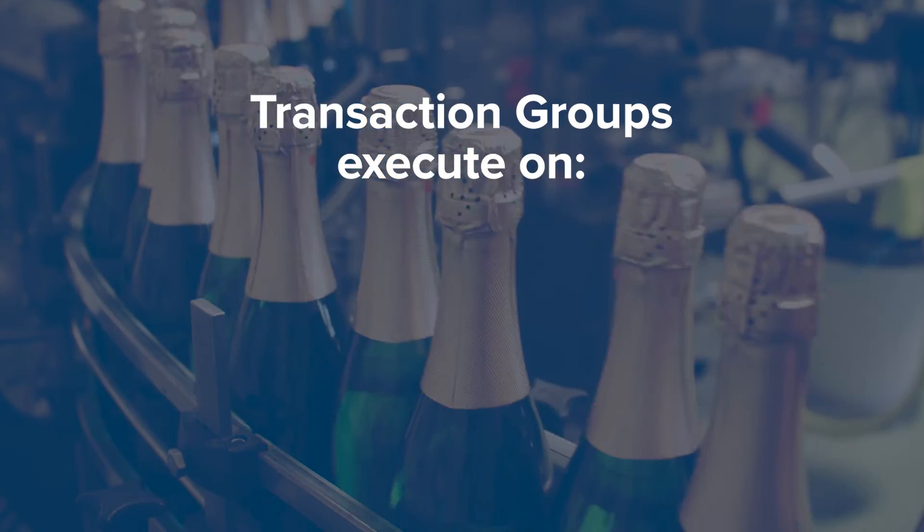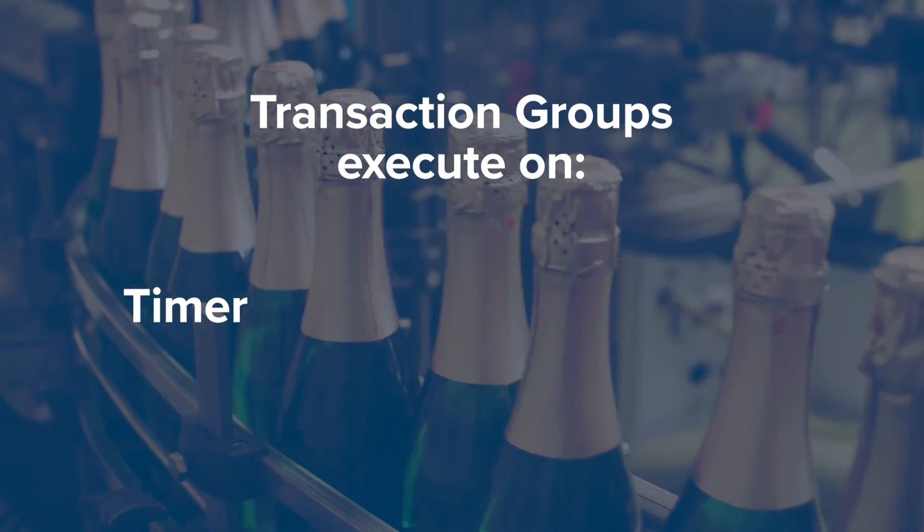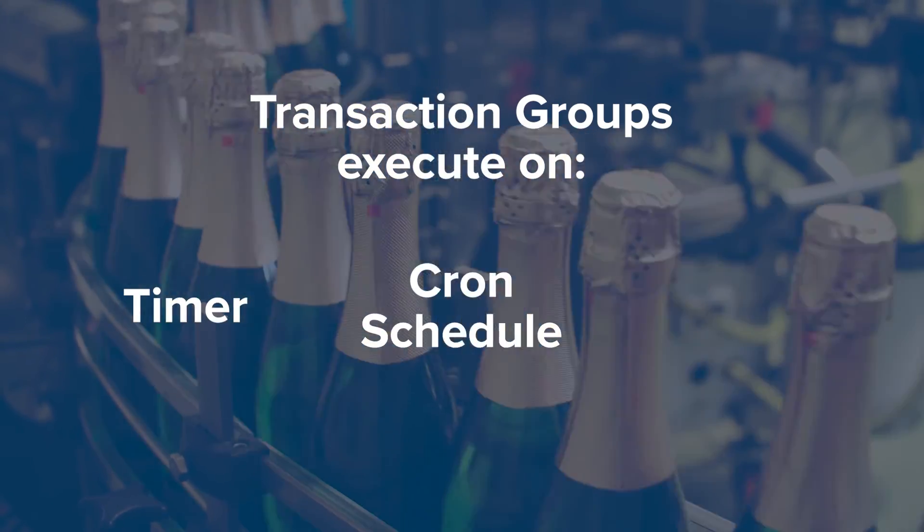Each transaction group allows you to map tags or other data points as inputs and outputs. For example, you can take 10 tags from a PLC and map them to individual columns of a wide table. Transaction groups execute either on a timer, cron schedule, or trigger.